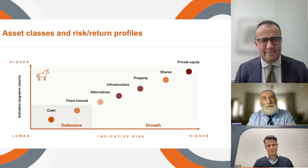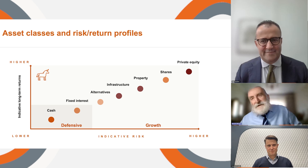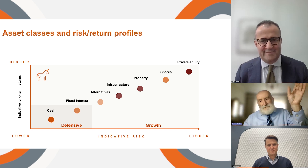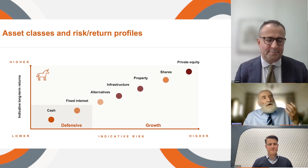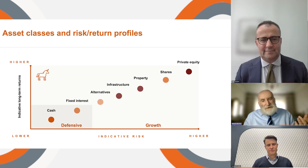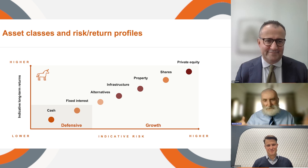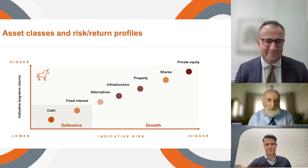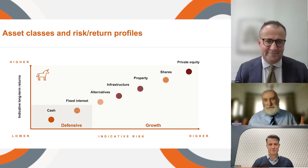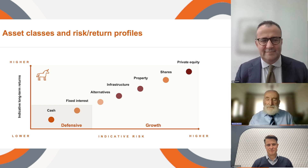I want to point out the unicorn in the top left quadrant. A unicorn is a mythical beast — we hear about it, but we know as a fact it doesn't exist. That unicorn is pointing to the fact that there is no such thing as an investment market or asset class that gives high returns for low risk. It doesn't exist, just as the unicorn doesn't exist. If it's too good to be true, it is.